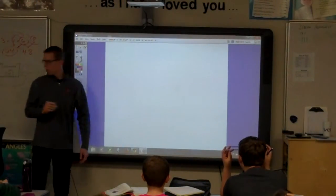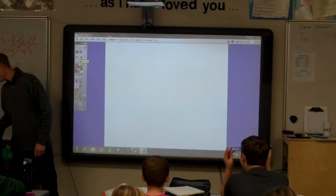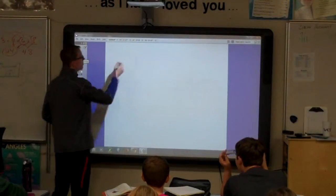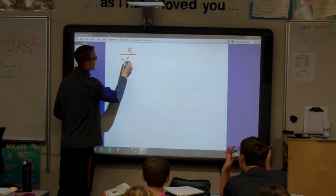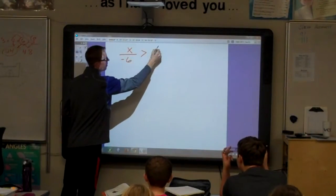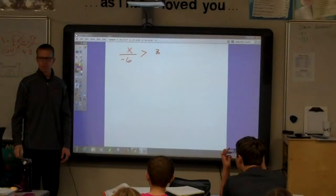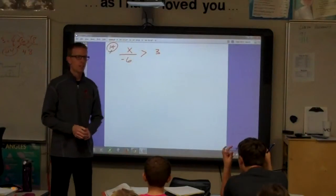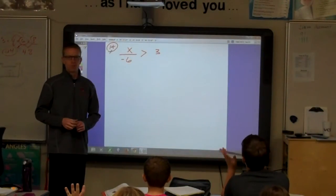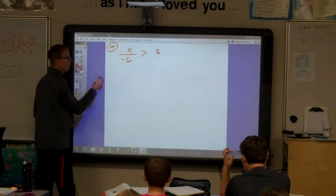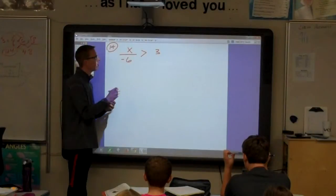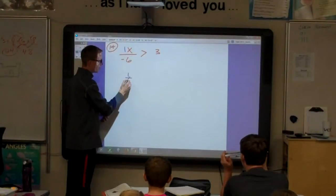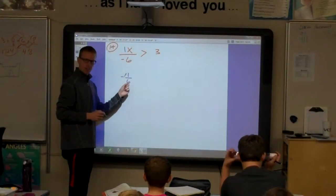How about one where there is division? Let's look at this one. X over negative 6 is greater than 3. This is number 14. X over negative 6 is greater than 3. Number 14 of your book. What's the coefficient? Joy? Negative 6 over 1 or... This is 1X. 1 over negative 6. The coefficient is negative. Are we going to have to switch the sign? Yes.